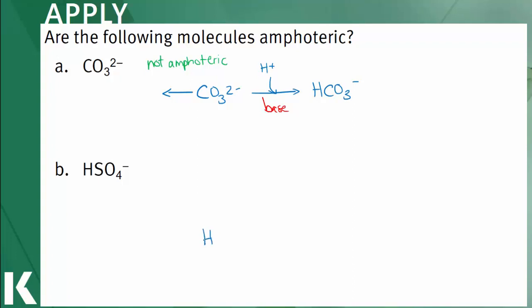In B, we can see that hydrogen sulfate is capable of gaining a proton to form sulfuric acid. Gaining a proton means that hydrogen sulfate is acting as a base.